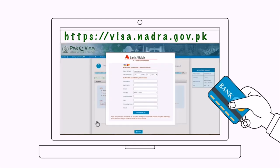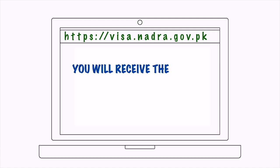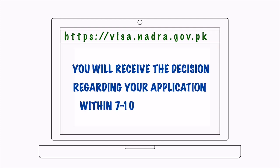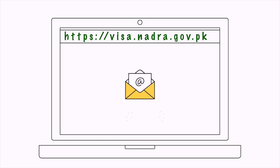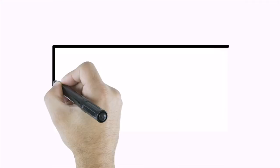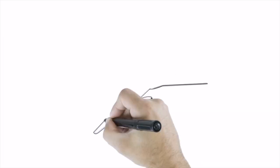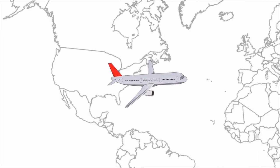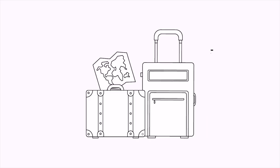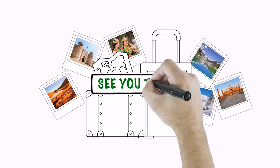Now carefully go through the information you have provided in the application, pay the fee online using your credit card, and submit the completed application. You will receive the decision regarding your application within seven to ten working days. If approved, you will receive a visa grant notice via email — just print it out or save a soft copy and start packing to experience amazing Pakistan, one of the most beautiful destinations of South Asia. See you there!